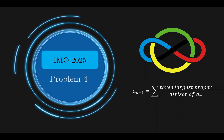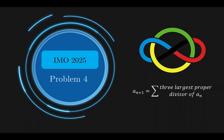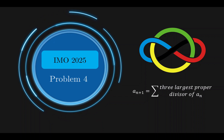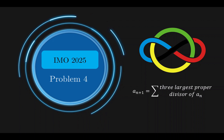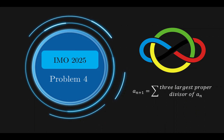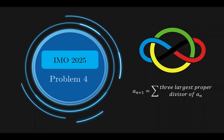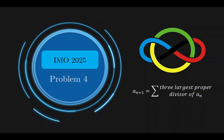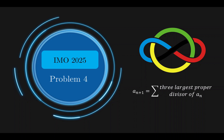Hello everyone, welcome back to Deakin Cuts and to Day 2 of the IMO 2025. So right now we'll be taking a look at problem number 4, which is also a number theory problem. Let's see whether this is an easy one or a difficult one.